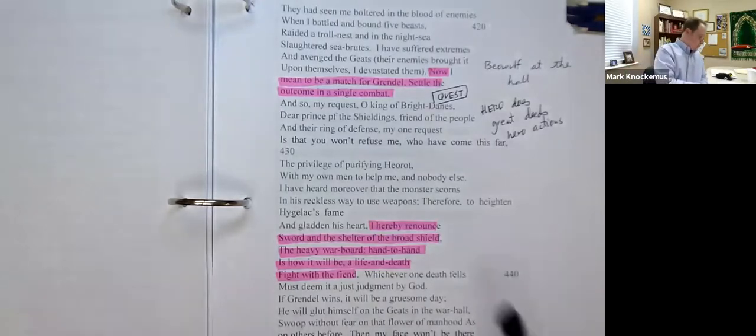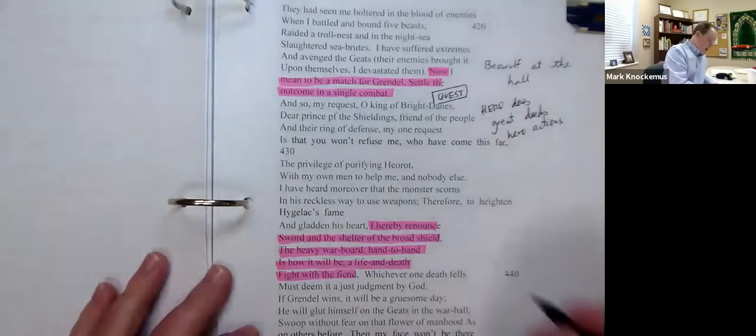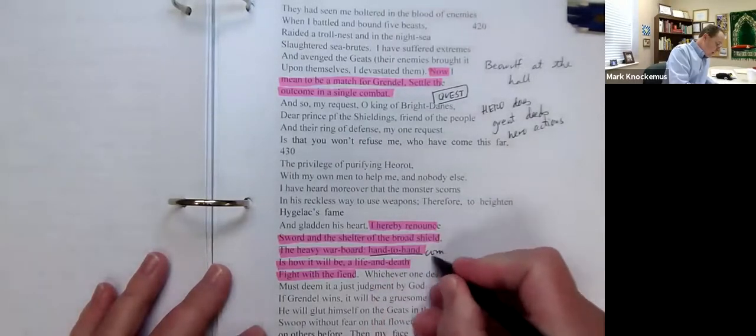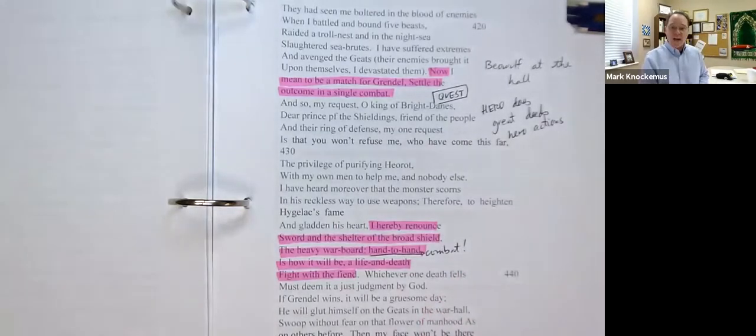Look at this. I hereby renounce sword and the shelter of the broad shield. The heavy war board, hand to hand, is how it will be. A life and death fight with the fiend. Beowulf proudly says, I'm going to do what? Hand to hand combat. Why? Why would you do that?